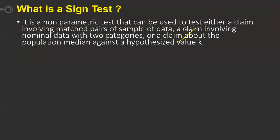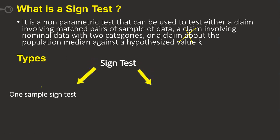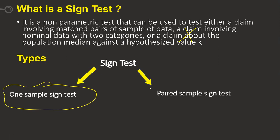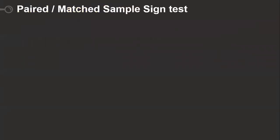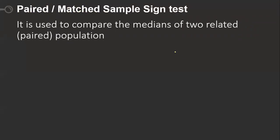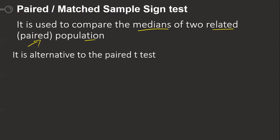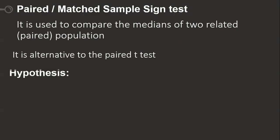There are two types of sign test: the one-sample sign test, which we have done previously, and the paired sample sign test. The paired matched sample sign test is used to compare the medians of two related or paired populations. It is an alternative to the paired t-test, which is used for parametric data. This is a non-parametric or distribution-free test.